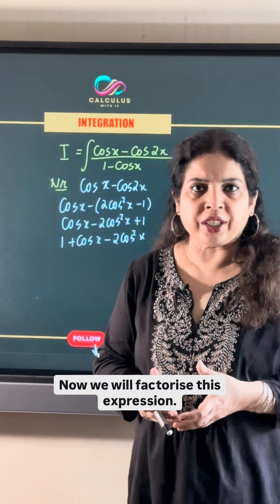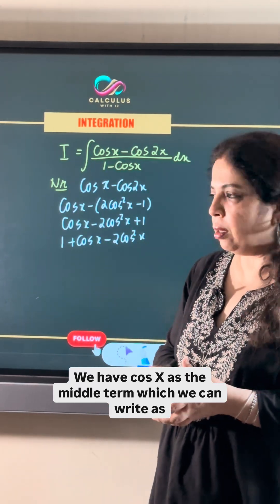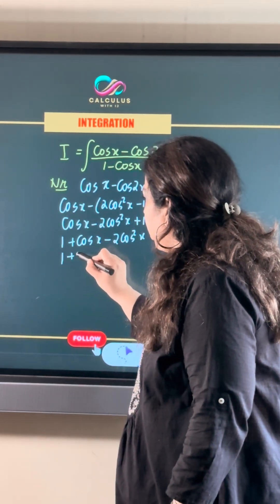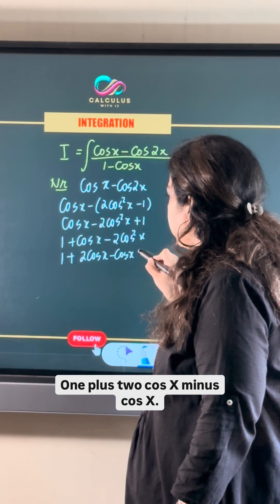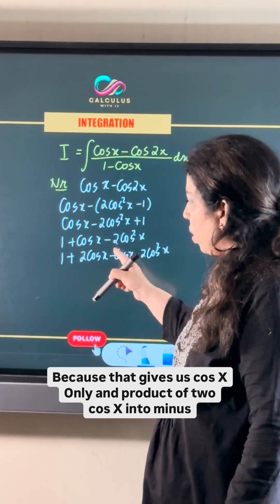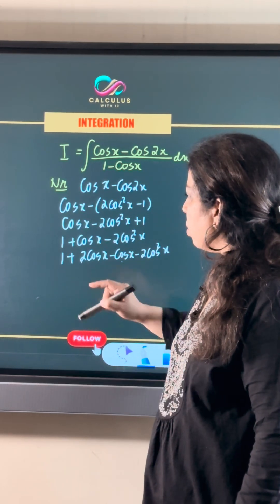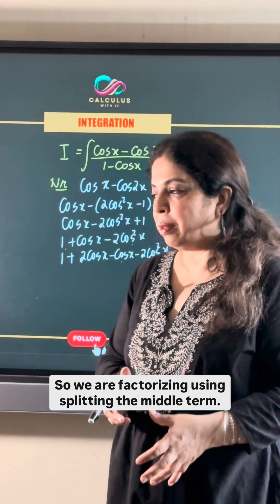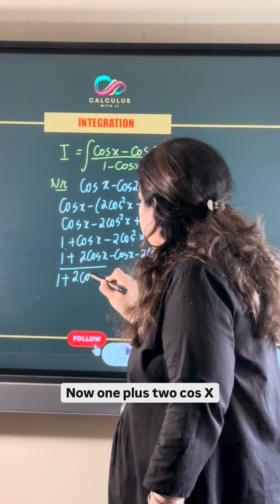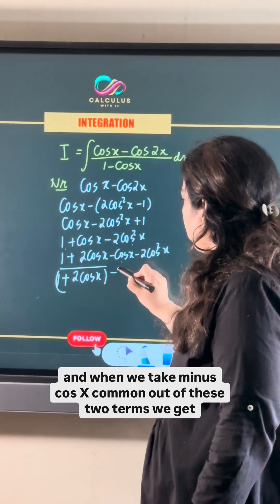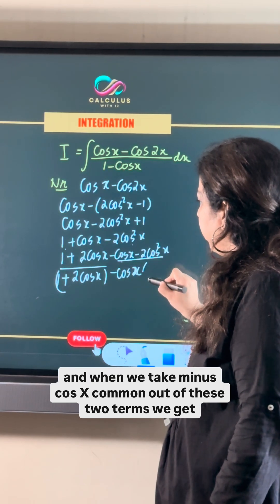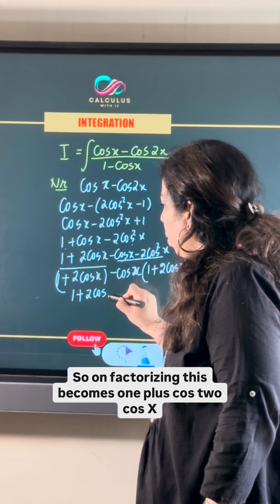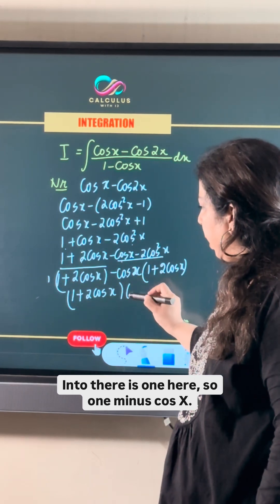Now we will factorize this expression. We have cos x as the middle term, which we can split as 2cos x minus cos x, giving us 1 plus 2cos x minus cos x minus 2cos²x. The product of 2cos x and minus cos x gives minus 2cos²x. Factorizing by splitting the middle term, we take minus cos x common from the last two terms to get (1 plus 2cos x)(1 minus cos x).